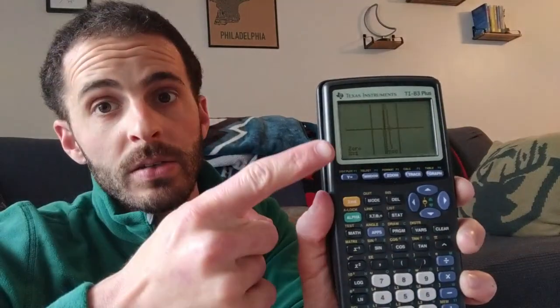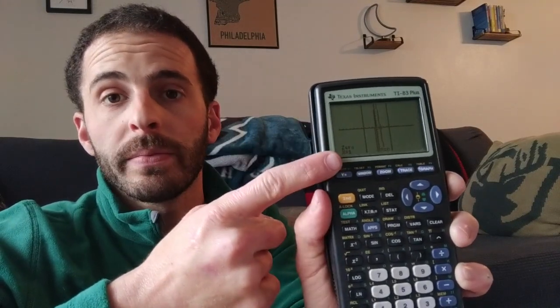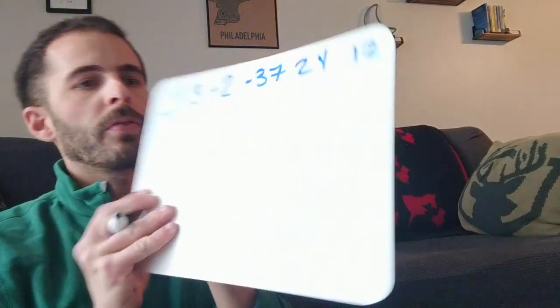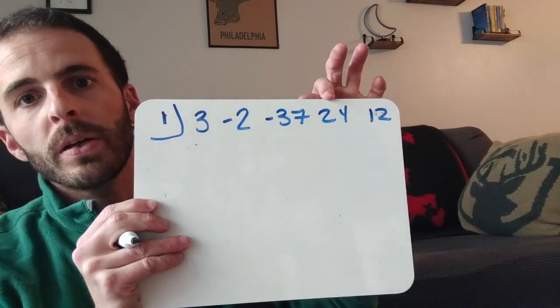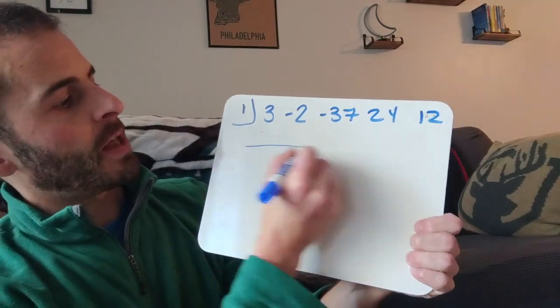Now, in my head, I'm thinking, is 1 a factor of 12 divided by a factor of 3? Yeah, it's 1 over 1. So 1 is definitely a possible factor. So once I realize that 1's a factor, I'm going to go ahead and do synthetic division. So 1's going to go in the box. And what am I going to divide it into? I'm going to divide it into 3x to the fourth minus 2x cubed minus 37x squared plus 24x plus 12. Remember, it's the coefficients. 3x to the fourth minus 2x cubed minus 37x squared plus 24x plus 12.